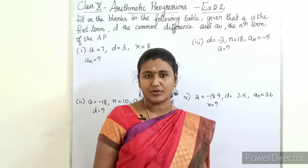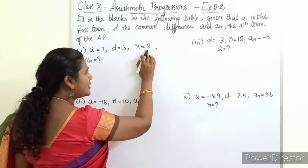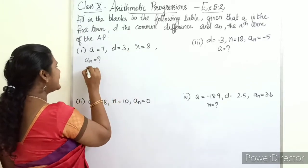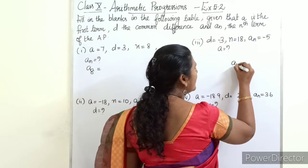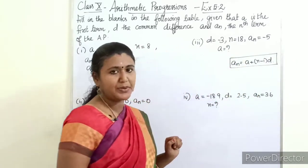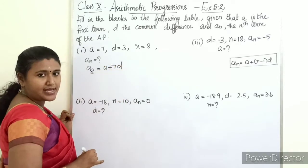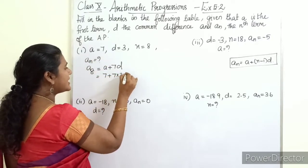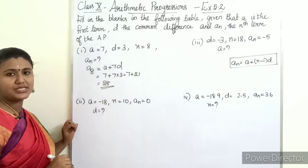Sub-question 1: a = 7, d = 3, n = 8; find a_n. Since n = 8, we need a_8. Using the formula a_n = a + (n−1)d, we get a_8 = a + 7d = 7 + 7×3 = 7 + 21 = 28. So a_n = 28.